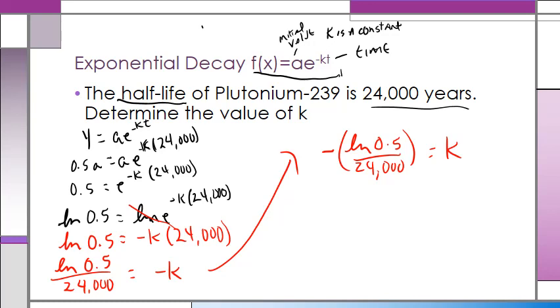So I want to put in the LN 0.5 divided by 24,000. Take the negative of that or times negative 1. And when I do, I'm going to get that k is approximately equal to 2.888 times 10 to the negative 5th power.